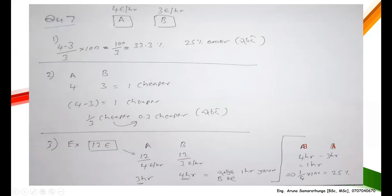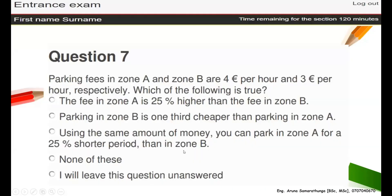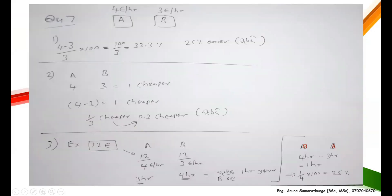Now what they are asking - using the same amount of money, you can park in zone A for 25% shorter period. You have to compare with B. This is the shorter spot. 4 minus 3, that is how many longer period in parking zone B - that's one hour. You have to divide by 4 because you have to compare with B. Then you divide by 4 and multiply by 100, then it will become 25%. So this is okay.